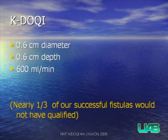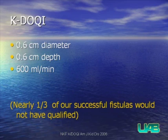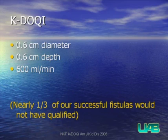These criteria were based on a research study, whereas the National Kidney Foundation K/DOQI Guidelines use different thresholds: a 6-millimeter diameter, 6-millimeter depth, and 600 milliliters per minute. This differs from our 4-millimeter diameter, 5-millimeter depth, and 500 milliliters per minute thresholds. To our knowledge, the K/DOQI criteria were developed by consensus panel and are not supported by research data. If we applied their criteria to our patient population, nearly one-third of our successful fistulas would not have qualified for fistula formation.